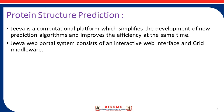The JIVA web portal system consists of an interactive web interface and a grid middle layer. Through the interface, users can submit prediction requests for protein structure, collect results, and maintain the history of prediction data.